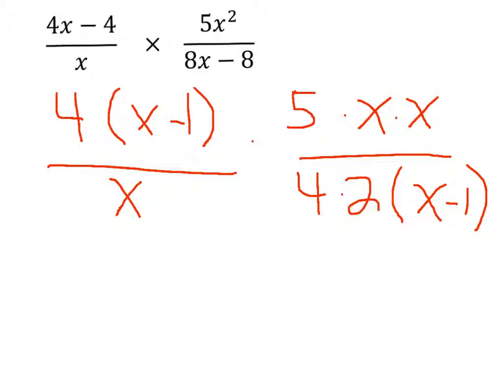What ends up canceling is the x minus 1 terms, an x from here and an x from up here, and the two 4's also cancel out.